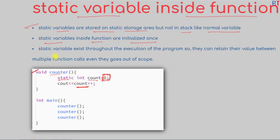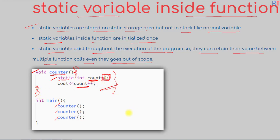Static variables exist throughout the execution of the program, so they can retain their value between multiple function calls, even when they go out of scope. In the example, the static variable count is inside the function counter — even if it goes out of scope multiple times, it will still retain its value across multiple function calls.